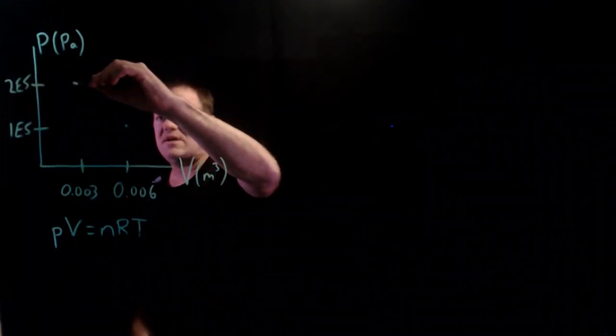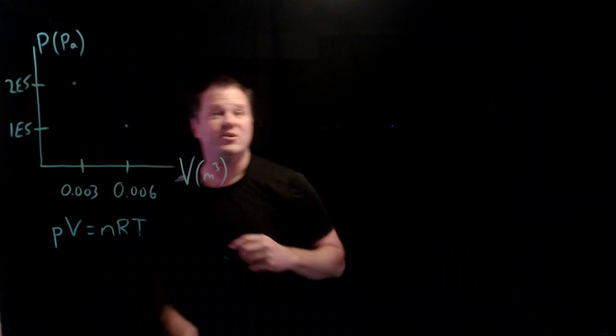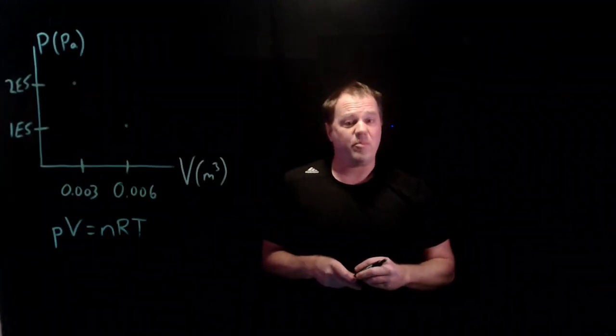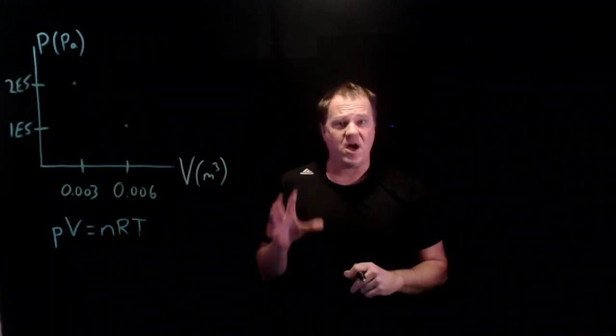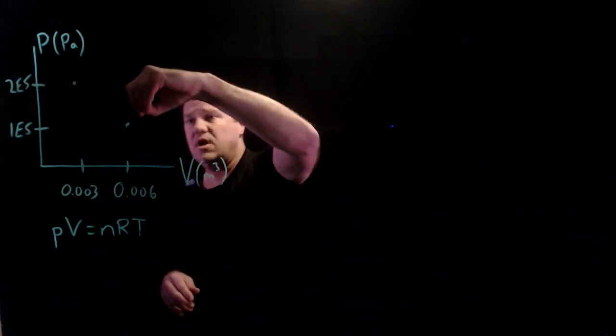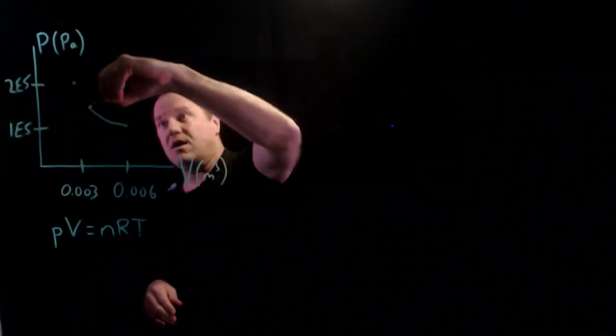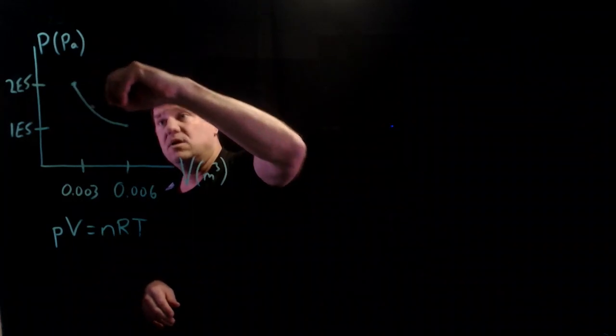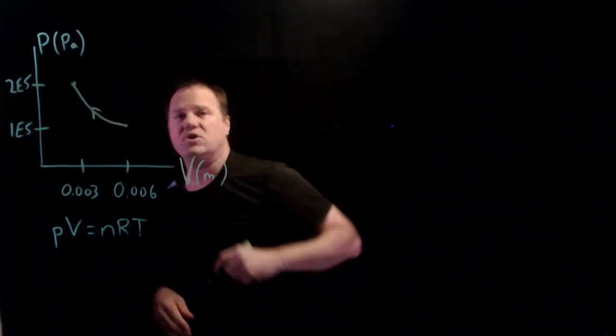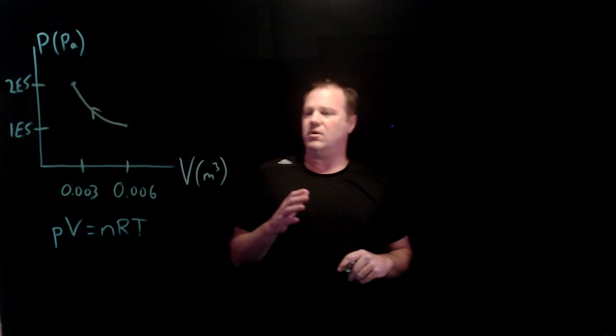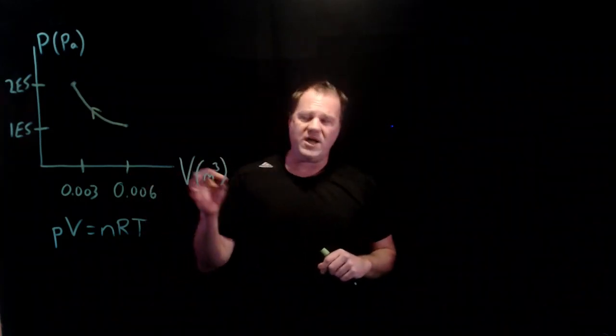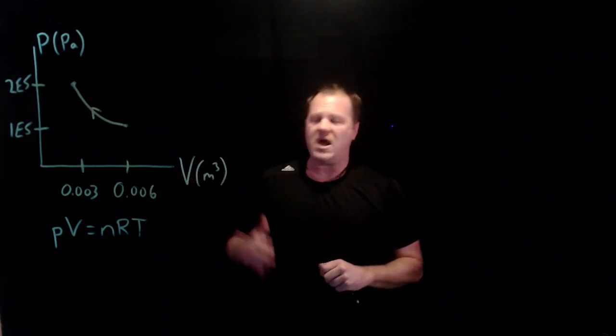It's tempting to draw a straight line between those, but that wouldn't be right. If we want the product pressure times volume to remain constant, it has to be a curve. Actually the mathematical term would be a hyperbola. So something like that. And you draw an arrow to show the direction. We're doing an isothermal compression, cutting the volume in half, doubling the pressure.